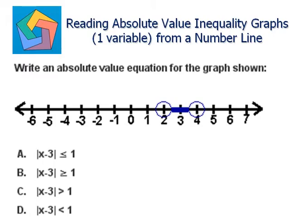Write an absolute value equation for the graph shown. We can see two hollow circles on 2 and 4, and the solution is represented in between these two numbers, 2 and 4. We can say the solution is given by 2 less than x less than 4, because the solution is lying between 2 and 4 and since they are hollow circles, that is why we use the inequality less than.